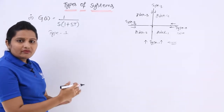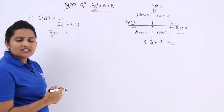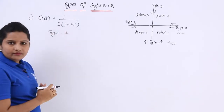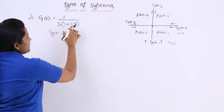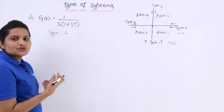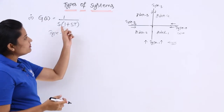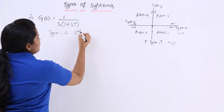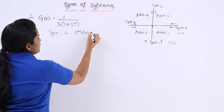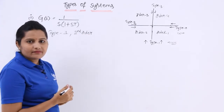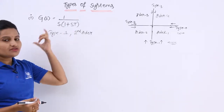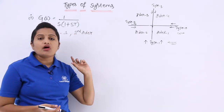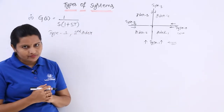Coming to order — the maximum value of S power will define the order of the system. If you multiply S by (1 + ST), you are going to get S squared. So the maximum power of S will be 2, which means this is a second order system. So for the given transfer function, this is a type 1 and order 2 — or second order — system.